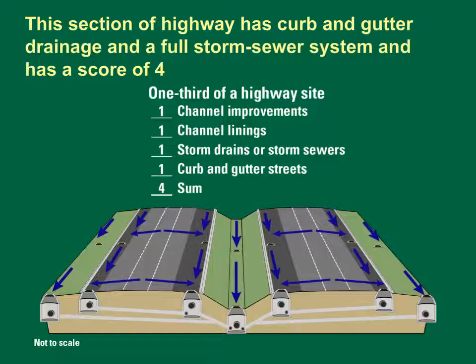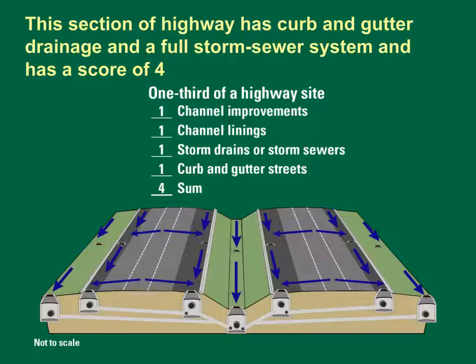This section of highway has curb and gutter streets with a full storm sewer drainage system draining the roadway, the median, and the shoulders. Runoff flows along the paved gutter to the drop inlet connected to the trunk line sewer system. This section has a fully engineered drainage system and would be scored as a four. Three such sections would produce a BDF of 12.